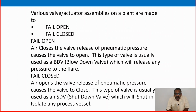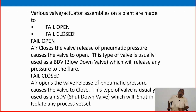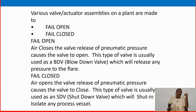Various valve and actuator assemblies on a plant are made to fail open or fail closed. In a previous instrumentation video, we studied that a control valve is operated by a pneumatic system — compressed air at around 85 psig. Once the pneumatic air fails, the valve goes to its normal position — either closed or open. That is, air is the driver of that valve. Once the air is stopped, the valve will go to its normal position.